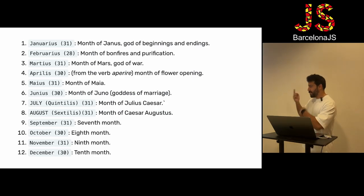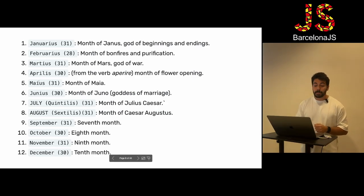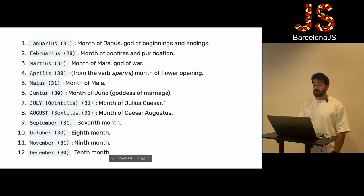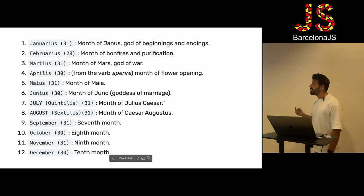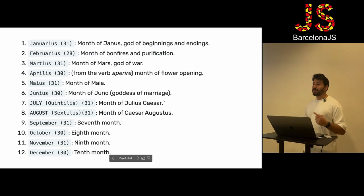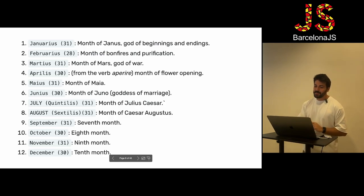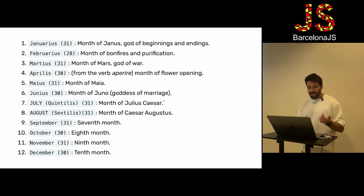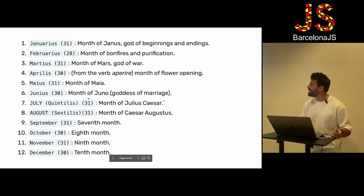If you think about it, September, October, November and December were originally months 7, 8, 9 and 10 — but they changed that for political reasons. They renamed the first unnamed month to July in honor of Julius Caesar. Then his successor Augustus wanted to do the same — he renamed Sextilis to August in his own honor. Since his month had 30 days, he didn't want to be less than Julius, so he changed it to 31 days and removed one day from February. That's basically why those two months have 31 days.